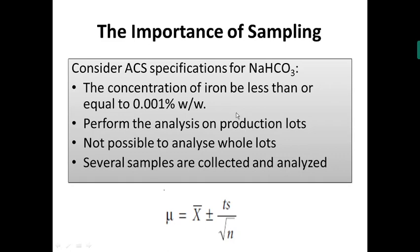Sampling can be defined as the collection of a proper sample for analysis by following an analytical procedure. The sample collected must be a representative one and should define the composition of the target population. For example, you might have collected the soil sample from land. Land is the target population, and the soil composition is very important. The sampling procedure you follow in order to collect the soil sample is going to be very important.